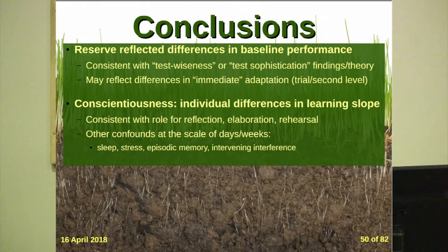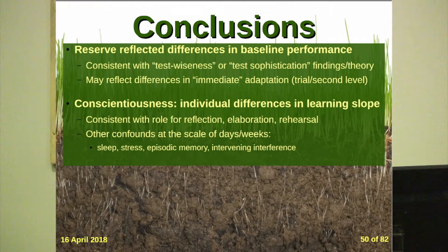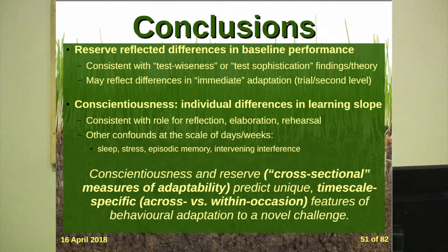Adaptation happens at all different timescales. The take-home of this study is that reserve reflects differences in baseline performance — education, pre-morbid function, reserve — affecting how we perform a test the first time. This relates to test-wiseness and might reflect immediate adaptation differences. In contrast, conscientiousness represents individual differences in slope of learning across trials. There are other confounds that can affect learning: sleep, stress, episodic memory, intervening interference — something to consider on the individual case level.